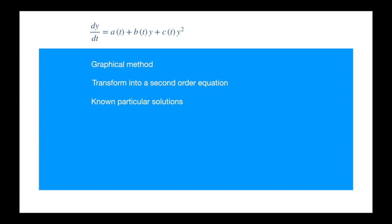Another situation is if one or more particular solutions of the Riccati equations are known, then one can express the solution in terms of integrals. The more particular solutions one knows, the fewer the number of integrals one has to evaluate. So if you know one solution, the general solution will involve two integrals. If you know two solutions, the general solution will involve one integral. And if you know three solutions, then you will be dealing with just ratios equal to a constant. You might ask, how would I know a particular solution? Well, you can guess a solution in some cases, or use trial and error. The harder you work, the easier the solution would be — hard work in the Riccati world pays.